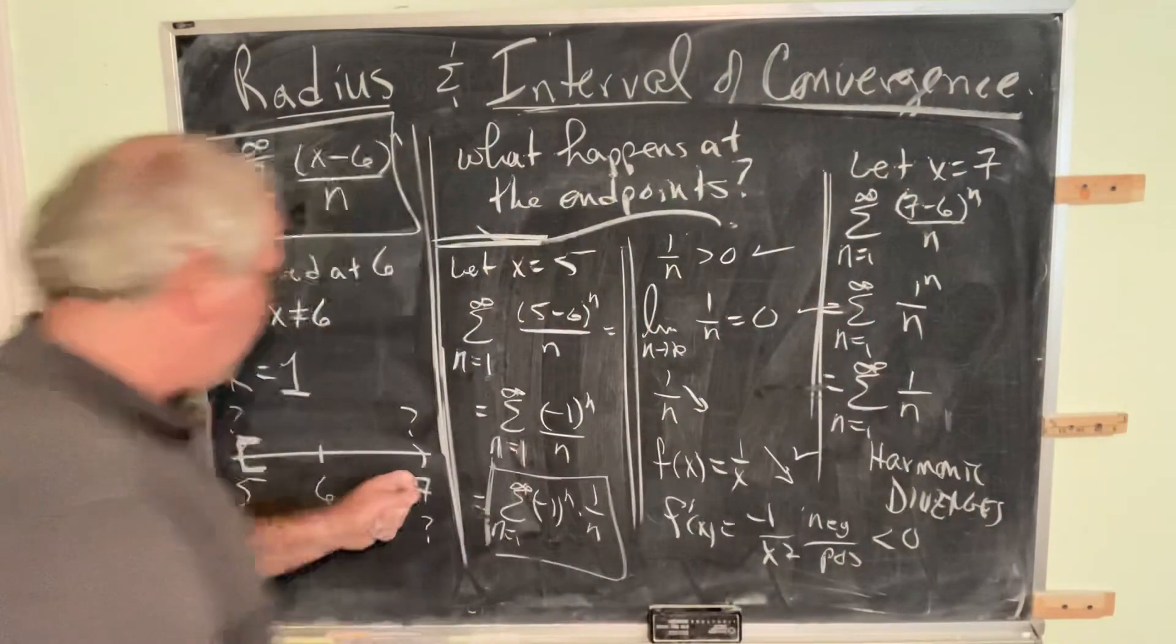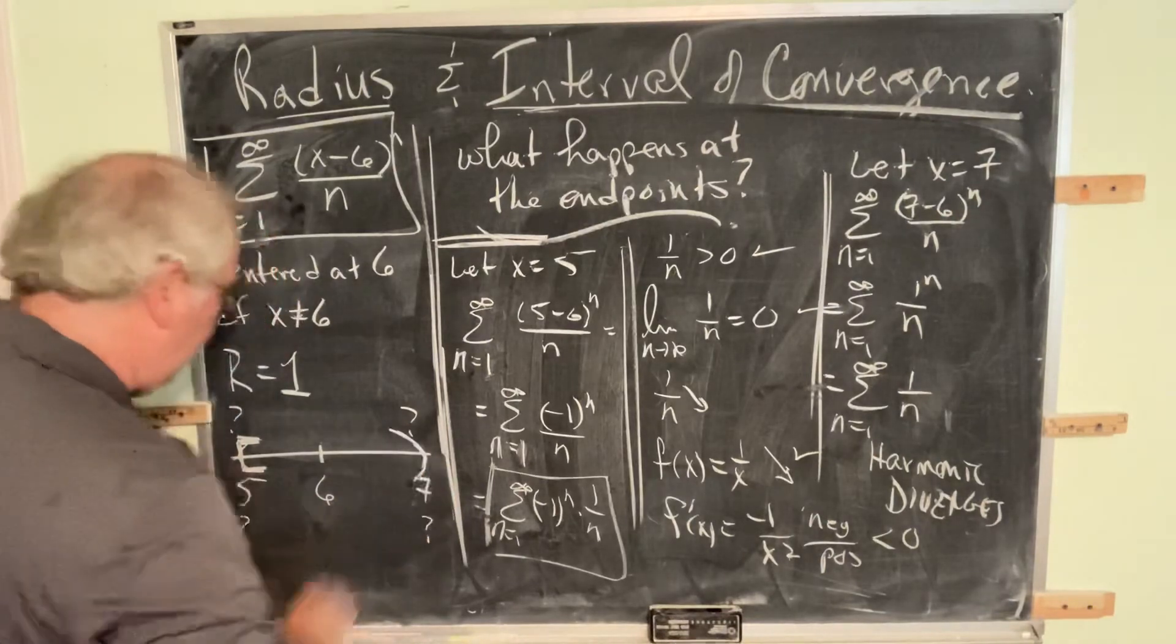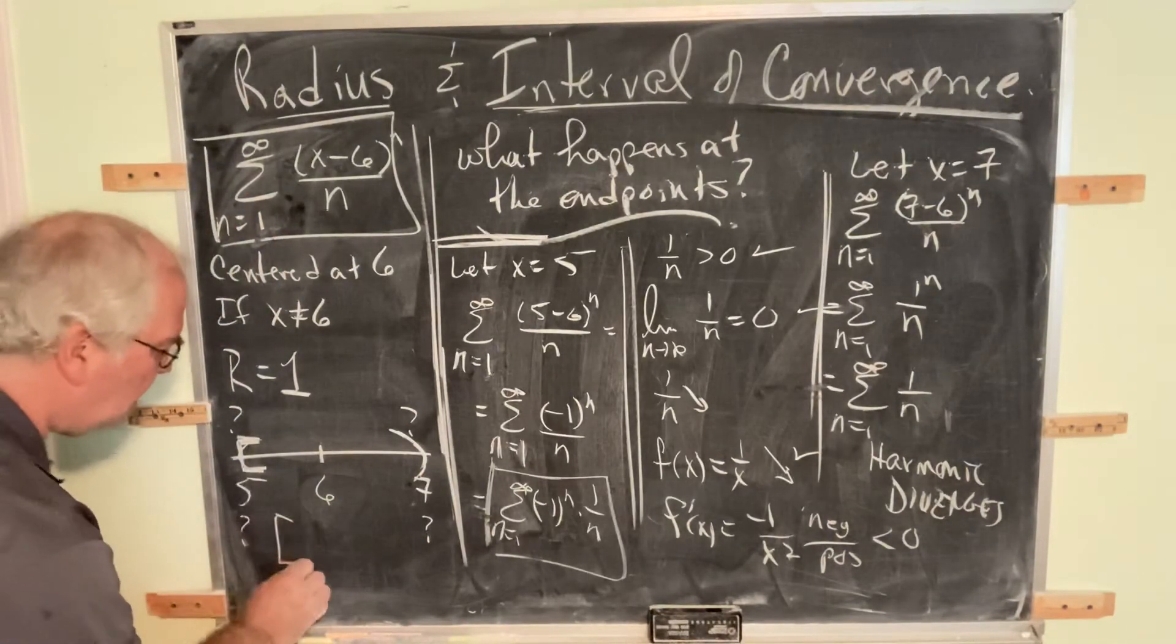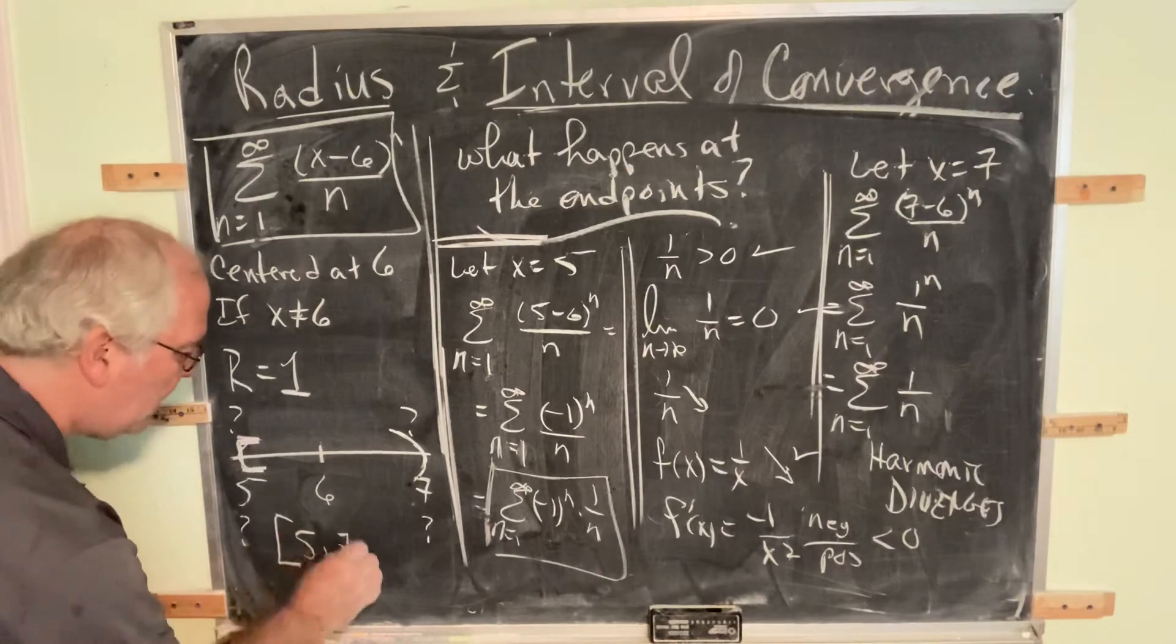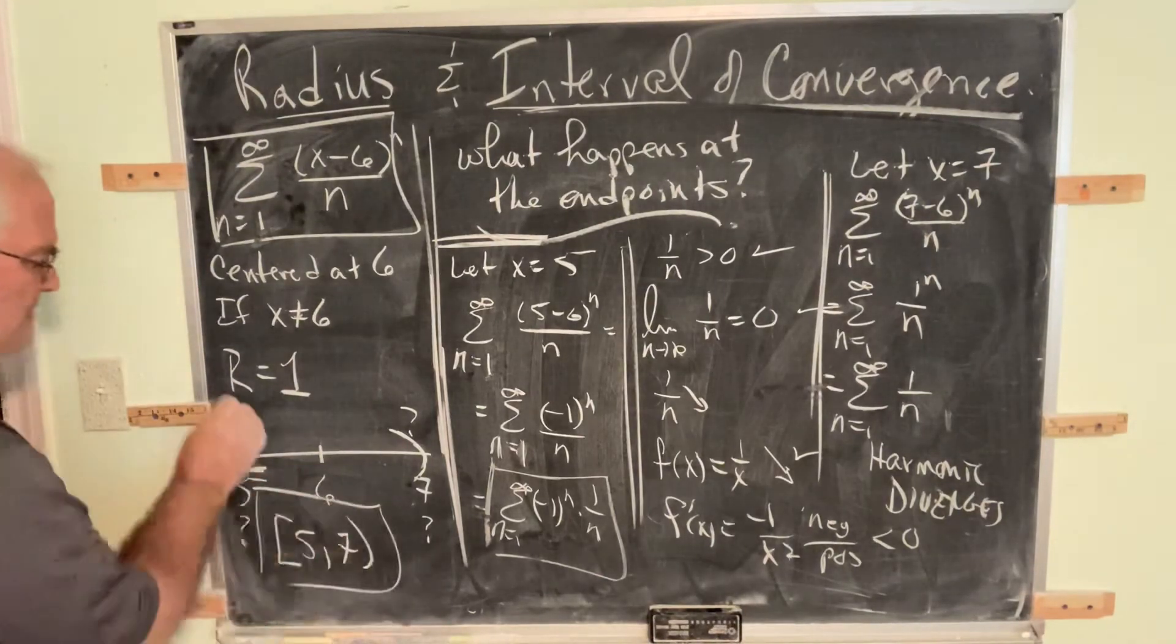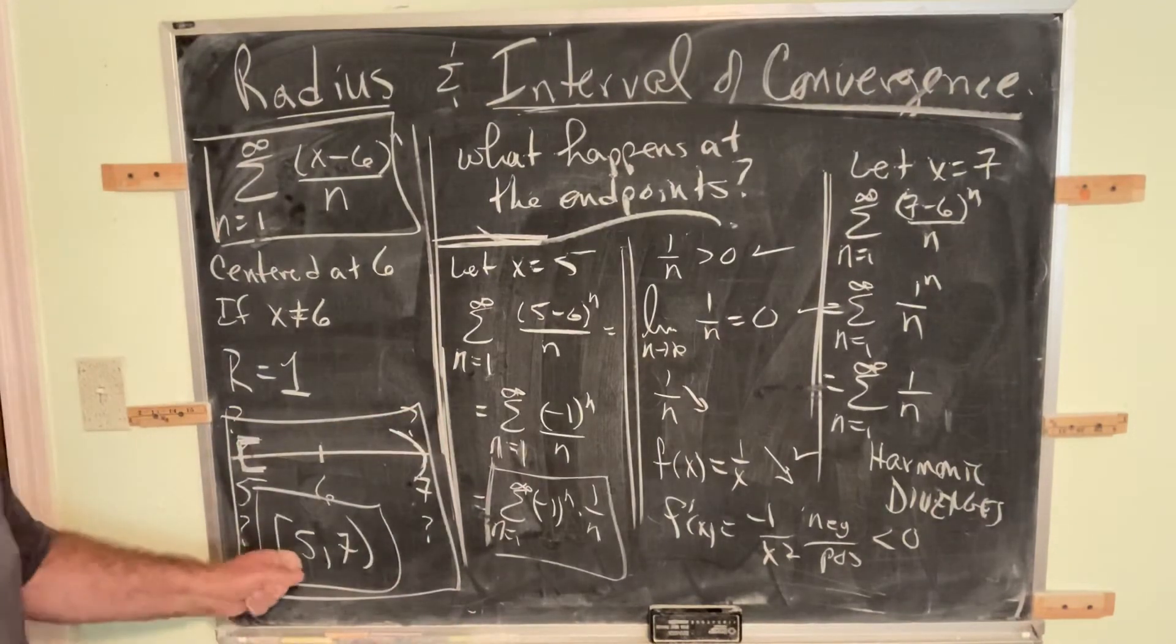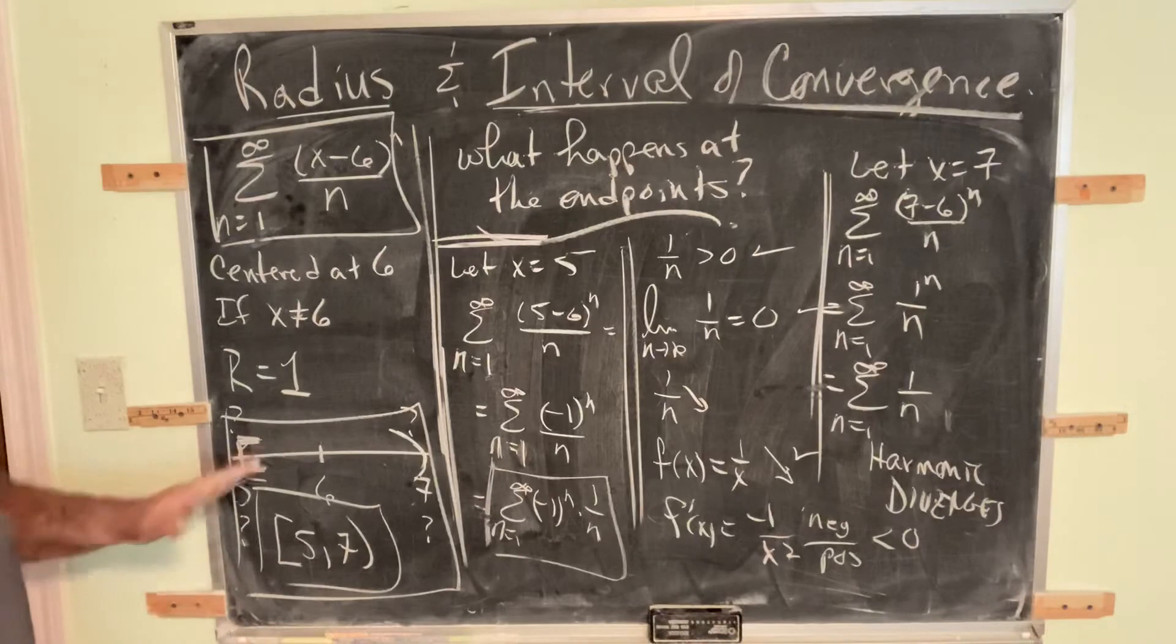And what does that mean for our endpoint? That means you do not include the endpoint. So the interval of convergence is closed at 5, open at 7. That's the procedure.